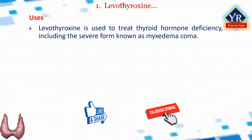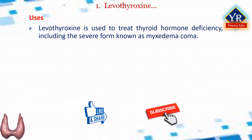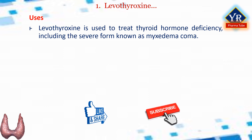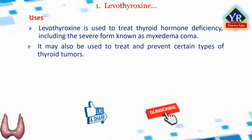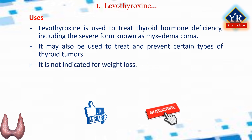Levothyroxine is used to treat thyroid hormone deficiency including the severe form known as myxedema coma. It may also be used to treat and prevent certain types of thyroid tumors. It is not indicated for weight loss. It is taken by mouth or given by injection into a vein.